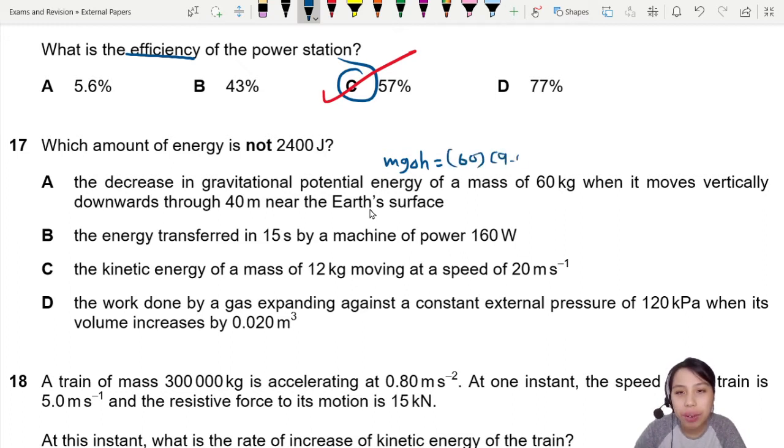Okay, so that would be our good old mg delta h. Sure, 60 kg times 9.81 times 40 meters. That will be a huge number which is 23,500 joules.